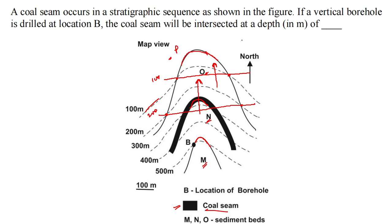So let's see what the question is asking. It's saying that a coal seam occurs in a stratigraphic sequence as shown in the figure, you can see that. If a vertical borehole is drilled at location B, the coal seam will be intersected at a depth in meters of — so this is point B and we have to drill a vertical borehole and it is asking at what depth will this vertical borehole intersect the coal seam.